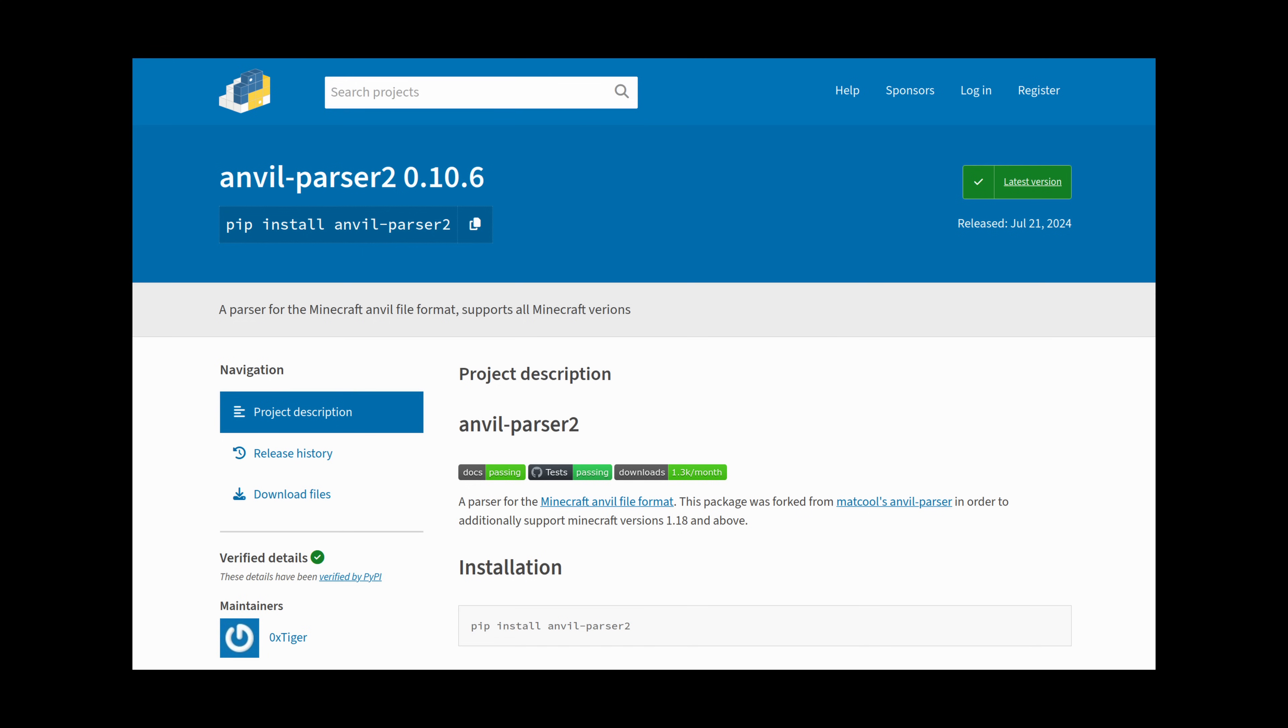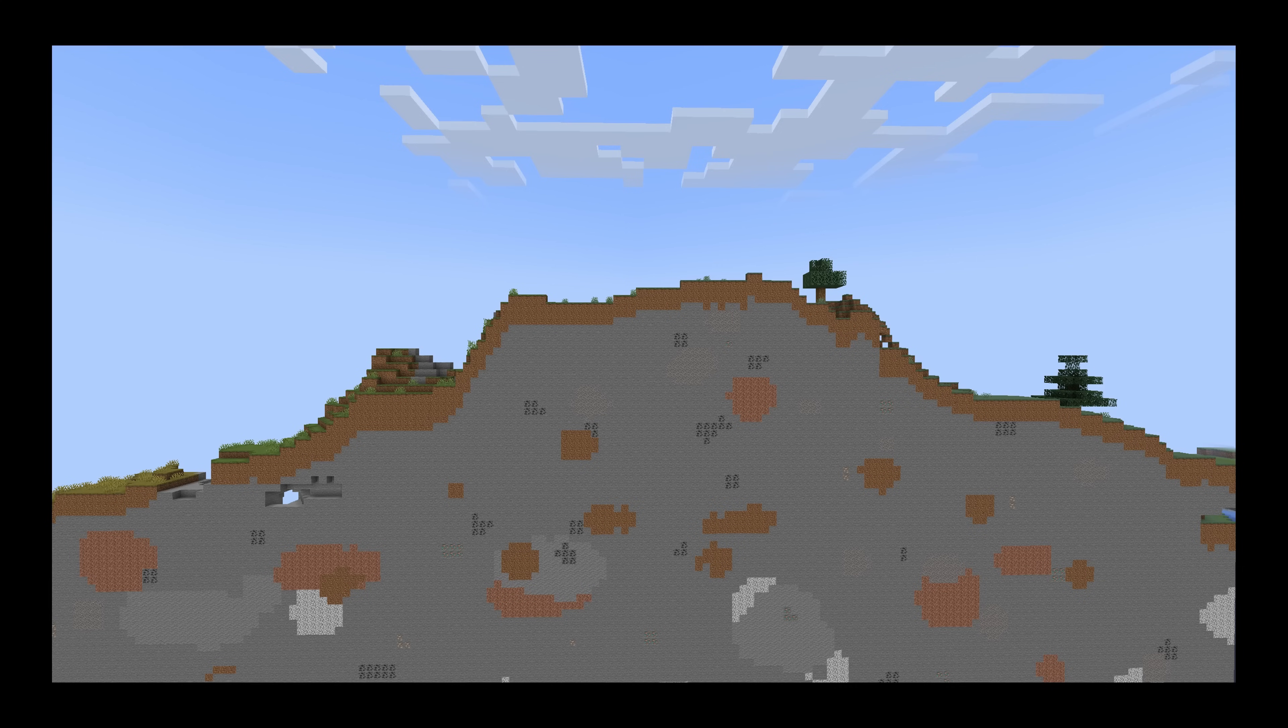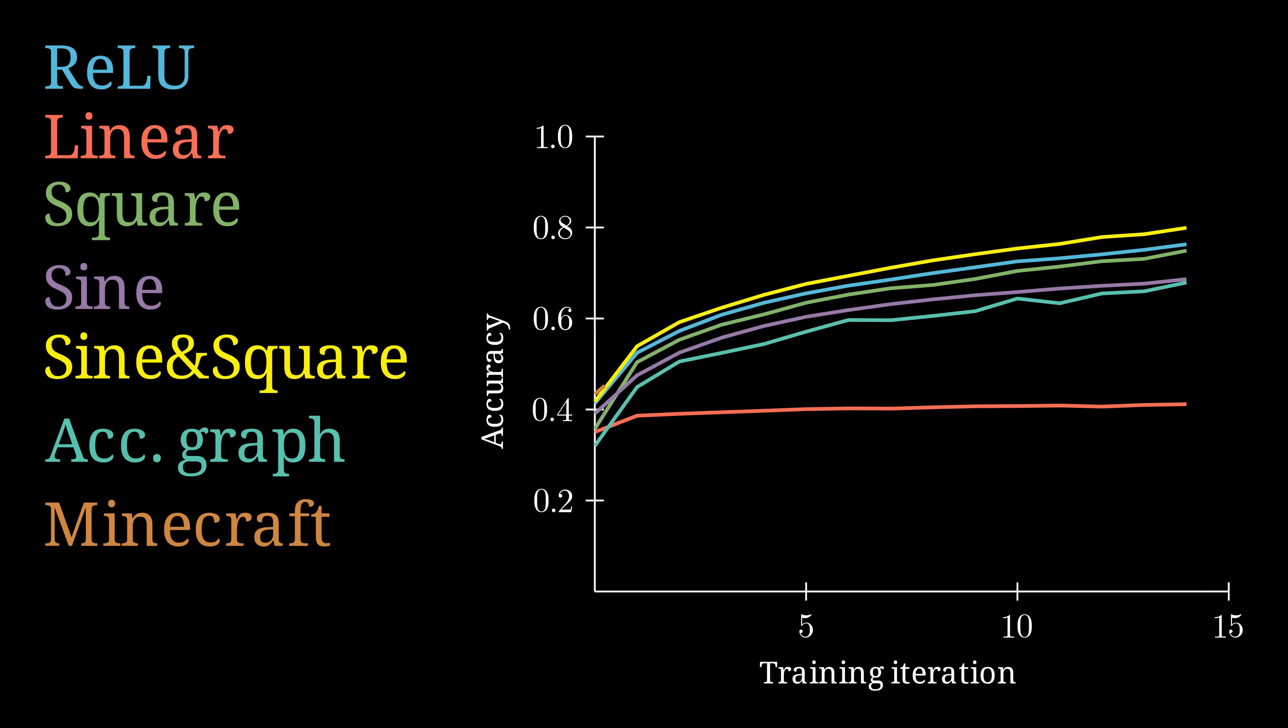Also I found this Python package for reading Minecraft world data. We can do a cross section of the generated land and take the ground surface as another function. Now it gets a bit ridiculous and the performance is also not contesting the others anymore. But you can see that in principle we can just take any function as long as it has some non-linearity.